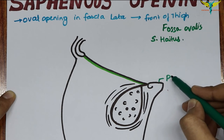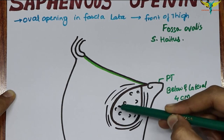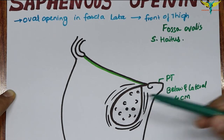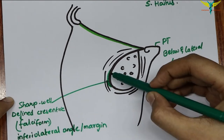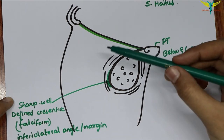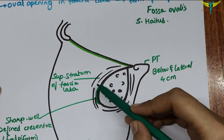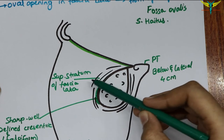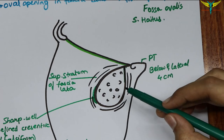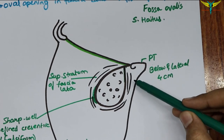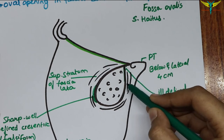The opening is bounded inferolaterally by a sharp falciform margin, which is formed by the superficial stratum of the fascia lata. This superficial stratum lies in front of the femoral sheath. The medial margin of the saphenous opening is ill-defined and is formed by the deep stratum, which lies at a deeper level and becomes continuous with the fascia over the pectineus muscle.